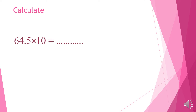Let's take many examples. 64.5 times 10 — we have to move the point how many steps? One step — excellent — because we have times 10. We move the point one step to the right side. It will be 645.0. Excellent. Let's continue.